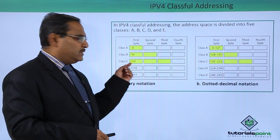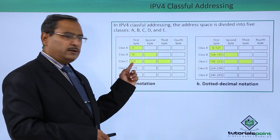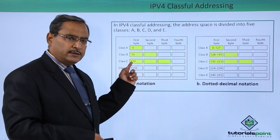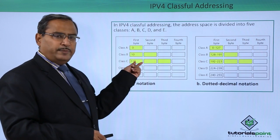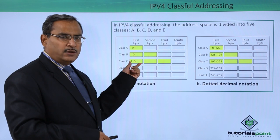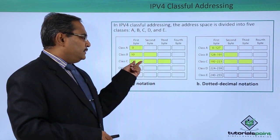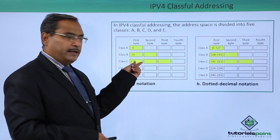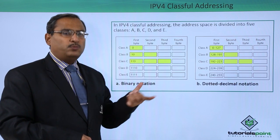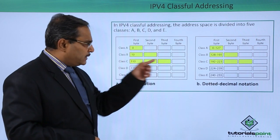In Class C, the first 3 bits are permanently 1, 1, 0. The value of the first two 1-bits is 128 plus 64 equals 192. The remaining 5 bits are flexible: minimum is all zeros giving 192, and maximum with all 5 ones adds 31, so 192 plus 31 equals 223. Class C ranges from 192 to 223.